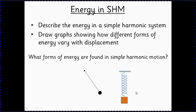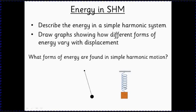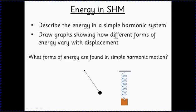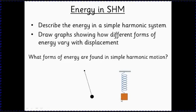The mass on the spring is more complicated. Again we have kinetic energy at the center, but when it's at the end we have potential energy in two different forms. At the bottom it's all elastic potential energy; at the top it's gravitational potential energy. In the middle it has some elastic potential, some gravitational potential compared to the bottom, and maximum kinetic energy.